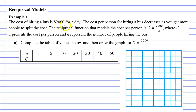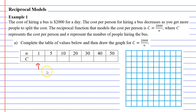The cost of hiring a bus is $2,000 for a day. The cost per person for hiring the bus decreases as you get more people to split the cost. The reciprocal function that models the situation is c equals $2,000 over n, where c represents the cost per person and n represents the number of people hiring the bus. For n equals 1, c equals 2,000 over 1, which equals $2,000 — which makes sense, if only one person catches the bus, it costs that person $2,000.